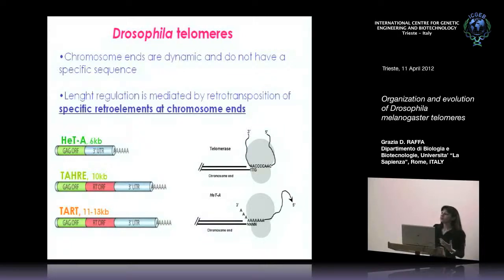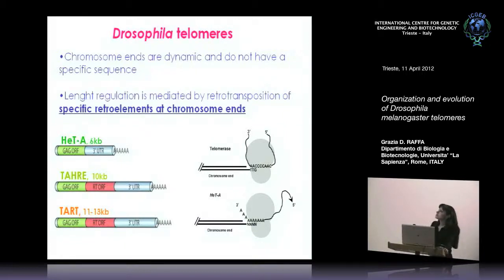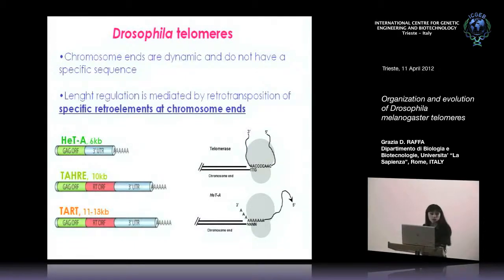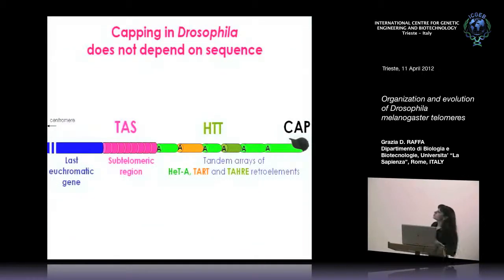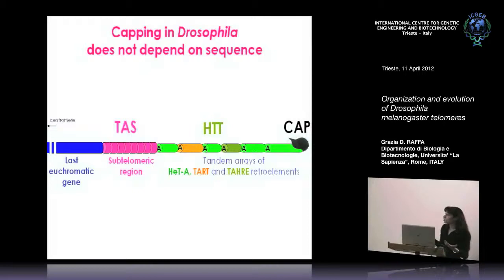These are HeT-A, TARE, and TART. These retrotransposons use a mechanism not very different from the one used by telomerase: while telomerase adds repeats onto the end by copying via reverse transcription from its RNA template, retrotransposons use their reverse transcriptase to copy sequences onto the end from a poly-A template. So even though Drosophila has no specific sequence at the end, the telomeres are composed of various arrays of HeT-A, TART, and TARE retrotransposons.